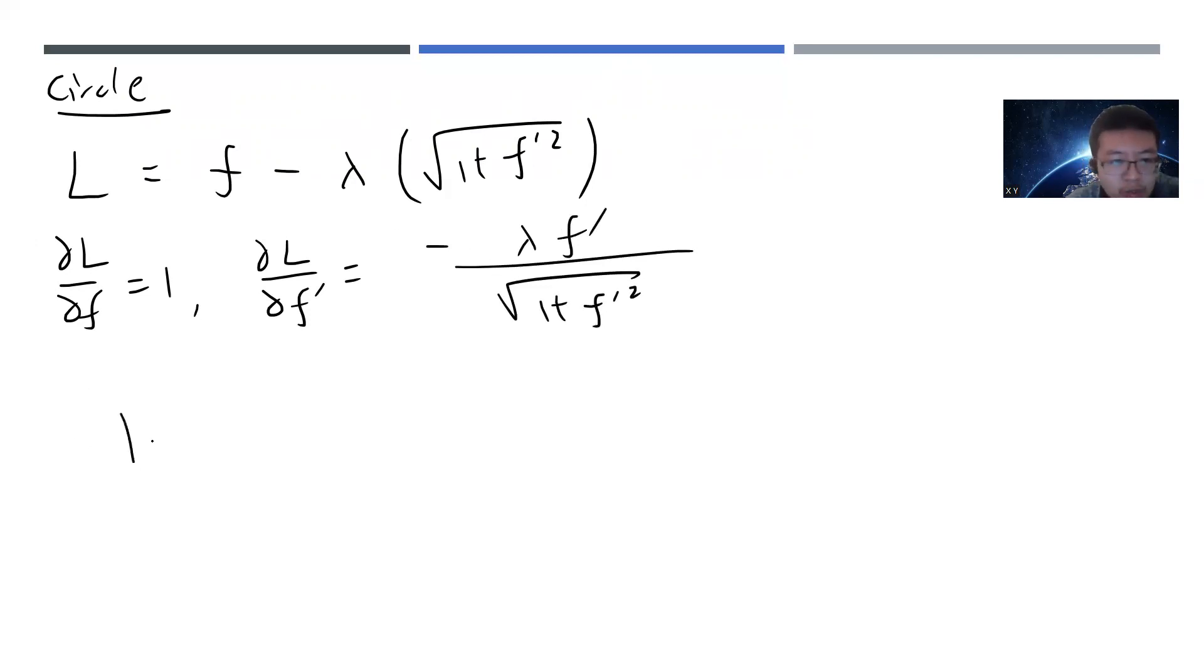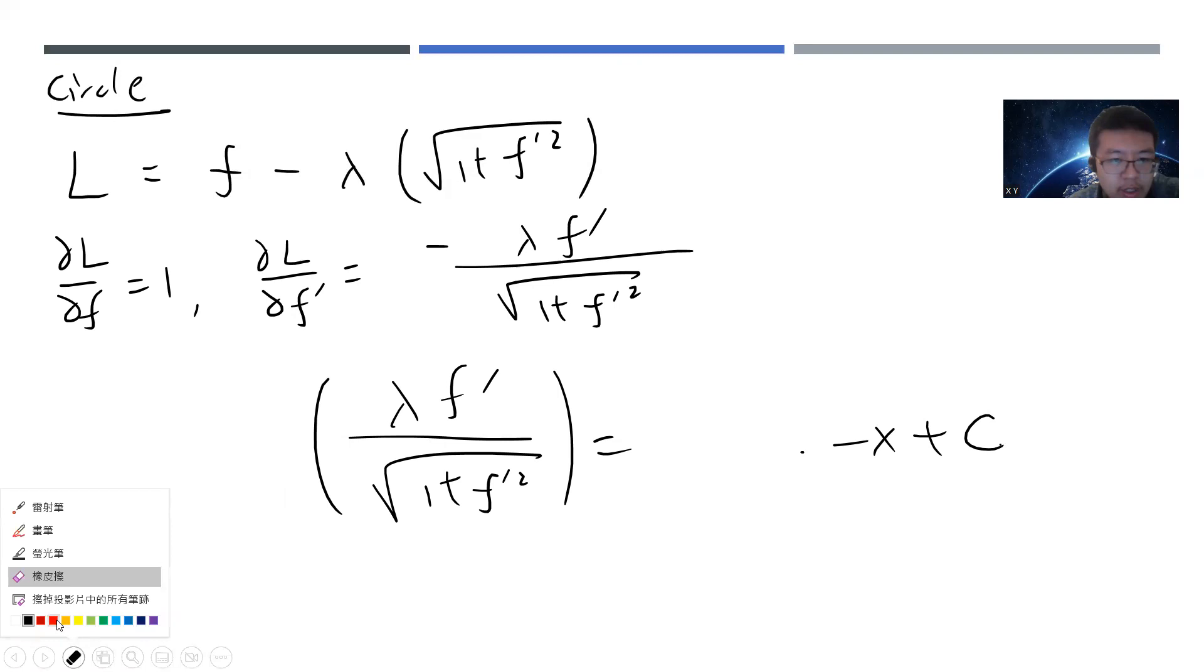Okay. So by the equation that we have one minus d divided by dx plus lambda F prime one plus F prime square. Okay. So very easy to solve this, right? So you can just minus one. And do the integration. Sorry. You have minus X plus some constant C.